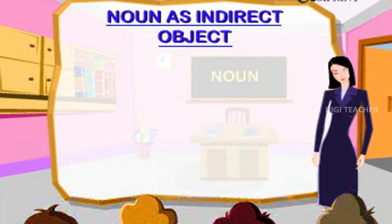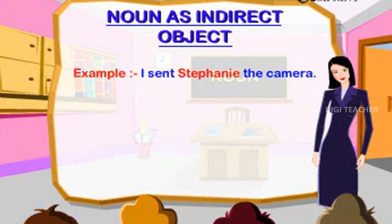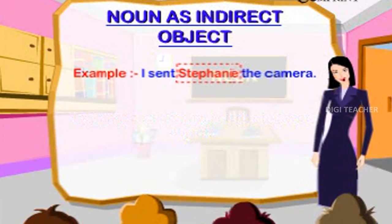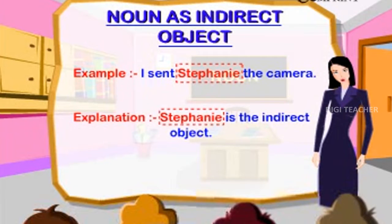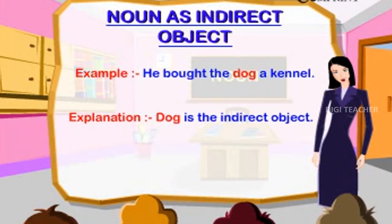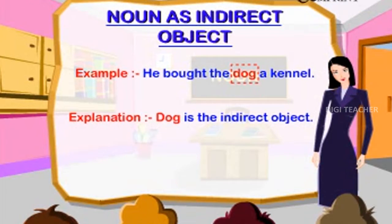Noun as Indirect Object. Example: I sent Stephanie the camera. Stephanie is the indirect object. Example: He bought the dog a kennel. Dog is the indirect object.